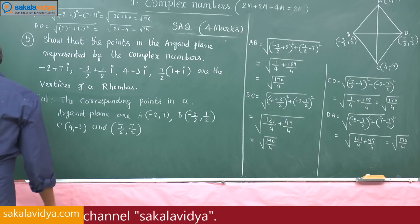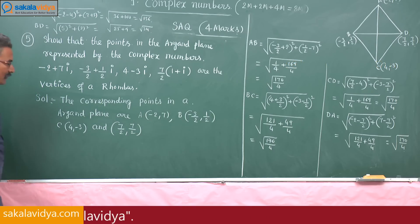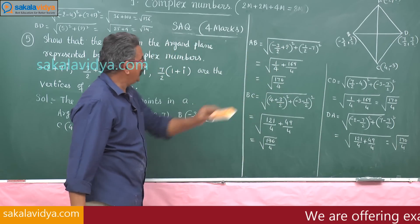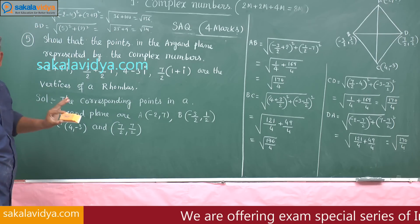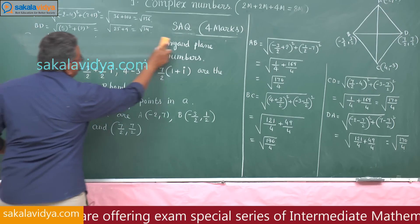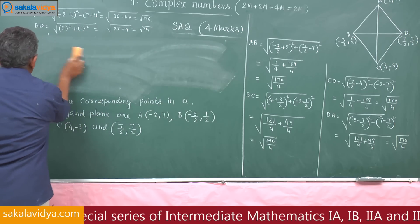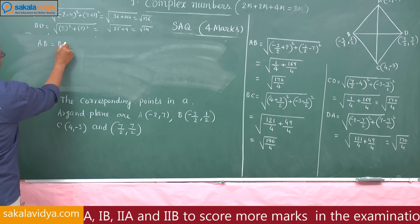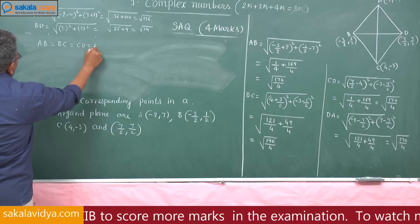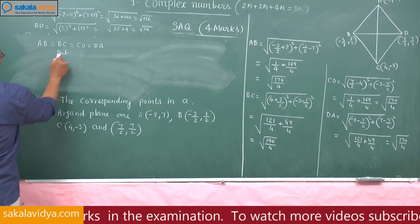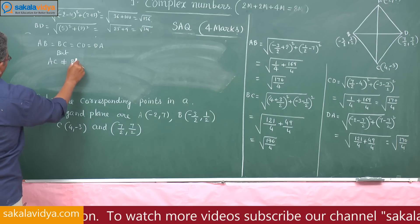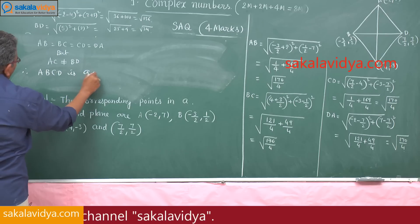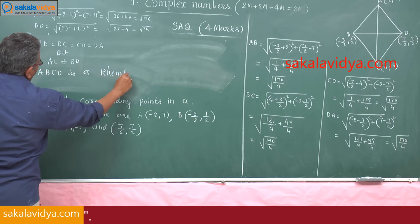We observe that all the sides are equal, but the diagonals are not equal. So AB = BC = CD = DA, but AC does not equal BD. Therefore, ABCD is a rhombus.